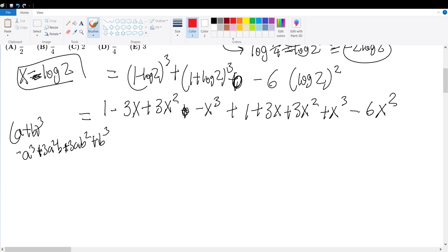All right, let's see what we could cancel. Negative 3 X and positive 3 X, these can go. 3 X squared plus 3 X squared is 6 X squared minus 6 X squared, so they could all go as well. Negative X cubed and positive X cubed, they could all go. So we're left with 1 and 1.